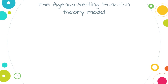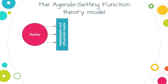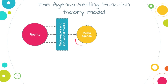The model we use for the agenda setting function theory is probably the most complicated model we have, but there is also a simplified version. At the start of the model you have reality. Gatekeepers and influential people within the media sift through that reality and then produce what they believe to be important — and so they create the media agenda. This is what we see in news broadcasts and what we read in newspapers.